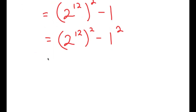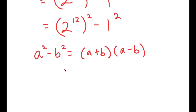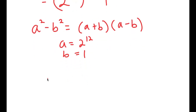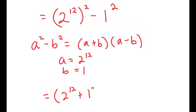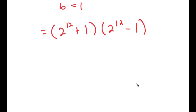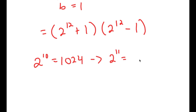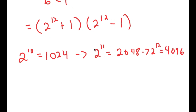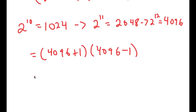Now I can use the difference of squares property: a squared minus b squared equals (a plus b)(a minus b). Here, a is 2 to the power of 12 and b is 1. So I get (2¹² + 1)(2¹² − 1). Since 2¹⁰ equals 1,024, then 2¹¹ equals 2,048, and 2¹² equals 4,096. So now I have (4,096 plus 1) times (4,096 minus 1), which is 4,097 times 4,095.